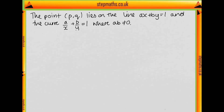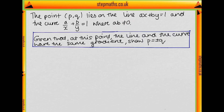Now we're told that the point (p, q) lies on the line ax + by = 1 and also on the curve a/x + b/y = 1, where a and b are not 0. We're asked to show that p = ±q, given that at this point the line and the curve have the same gradient.